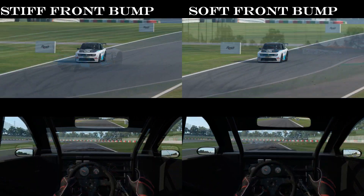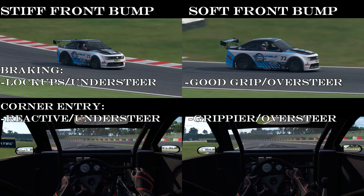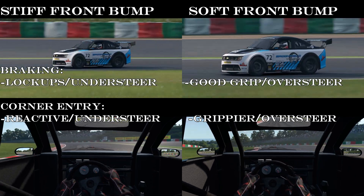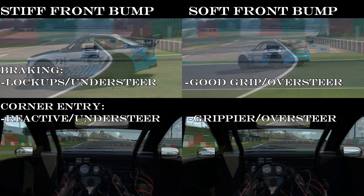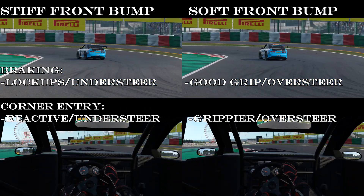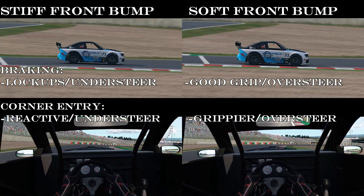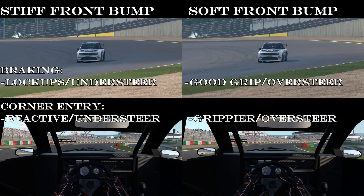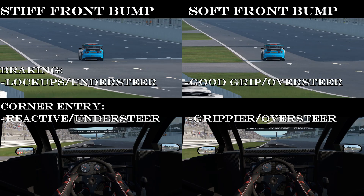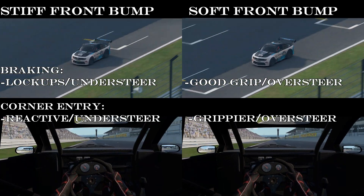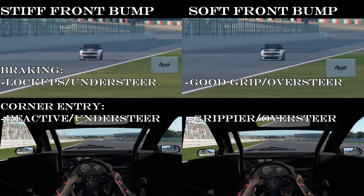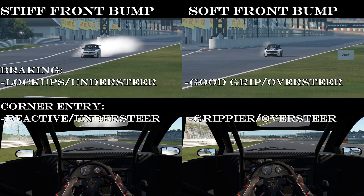Front bump will help you manage the car in the following ways: on initial braking and trail braking, a stiff front bump damper will have a tendency to lock up; soft front bump dampers will be more grippy — perhaps too much — and the back end will want to step out. On initial turn-in, stiff front bump dampers will react quickly and tend to understeer into the corner; soft front bump dampers will react more gradually, providing more grip slower, and tend towards oversteer. If your car has not enough bite on braking and turn-in, or too much, adjusting the front bump dampers could be something to try.